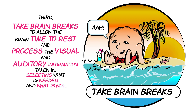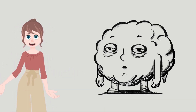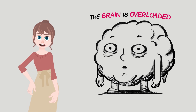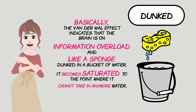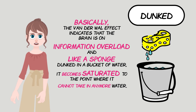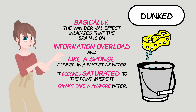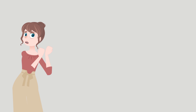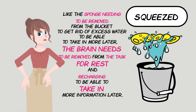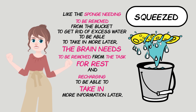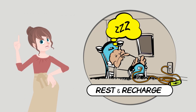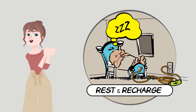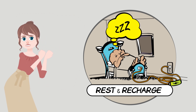Third, take brain breaks to allow the brain time to rest and process the visual and auditory information taken in, selecting what is needed and what is not. Basically, the Vanderwall Effect indicates that the brain is on information overload, and like a sponge dunked in a bucket of water, it becomes saturated to the point where it cannot take in any more. Like the sponge needing to be removed from the bucket to get rid of excess water, the brain needs to be removed from the task for rest and recharging to be able to take in more information later.